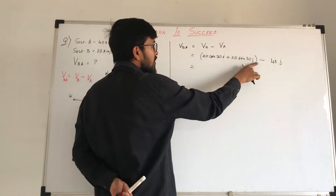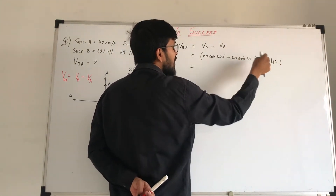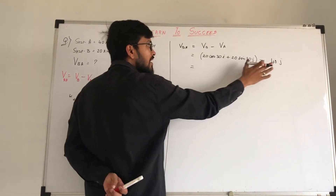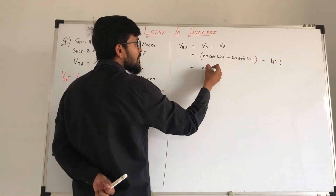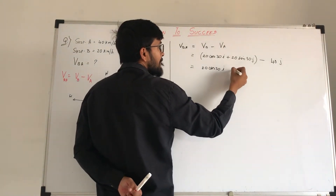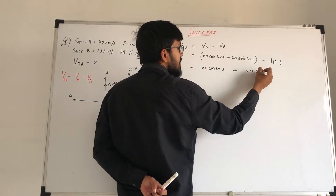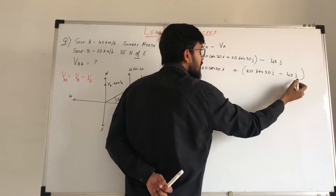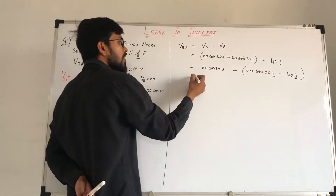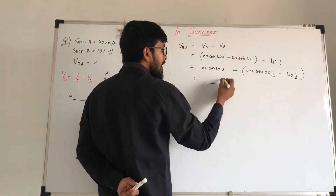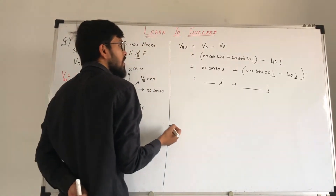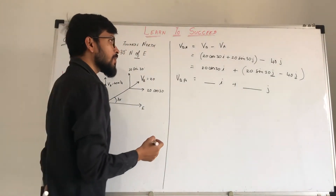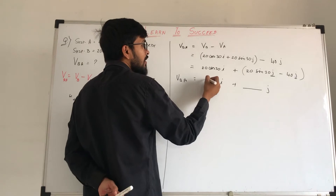Now we open the brackets and group the i components together and the j components together. So here we have 20 cos30 i plus 20 sin30 j minus 40j. We have two terms in the j component, so we add them together. We get an i component and a j component. Suppose the i component is 10 and then the j component is added.